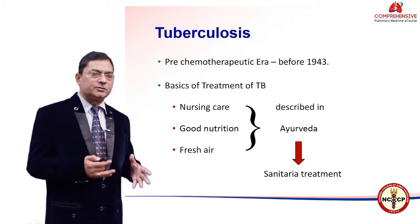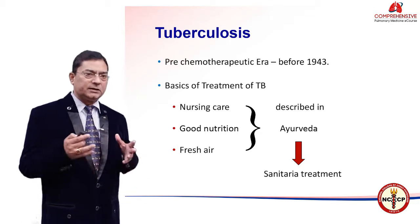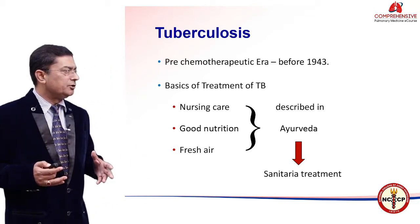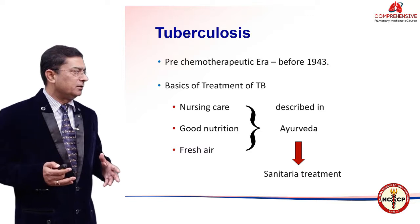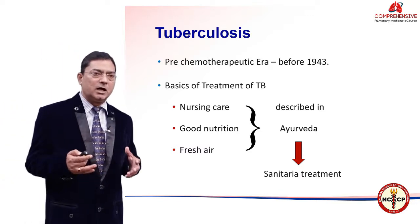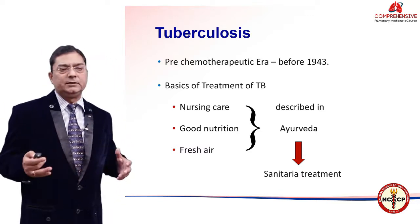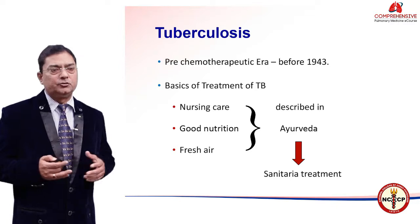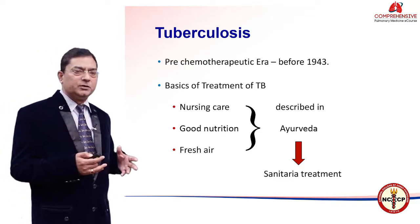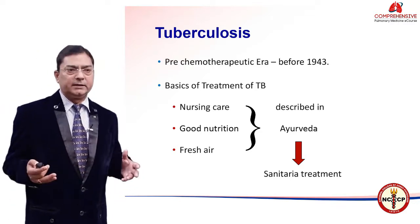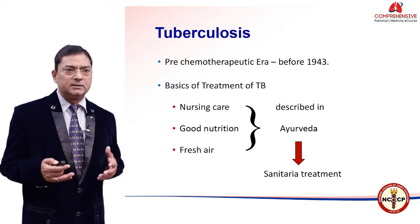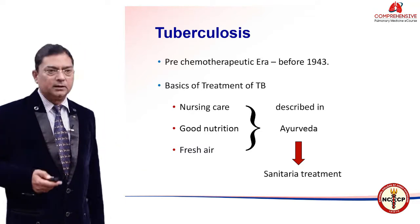The basics of tuberculosis treatment until 1943 were good nursing care, good nutrition, and fresh air. The same description was given in Ayurveda. In the 17th and 18th centuries throughout the world, the same kind of treatment was offered in the sanitaria, and that is why it is referred to as sanitaria treatment.